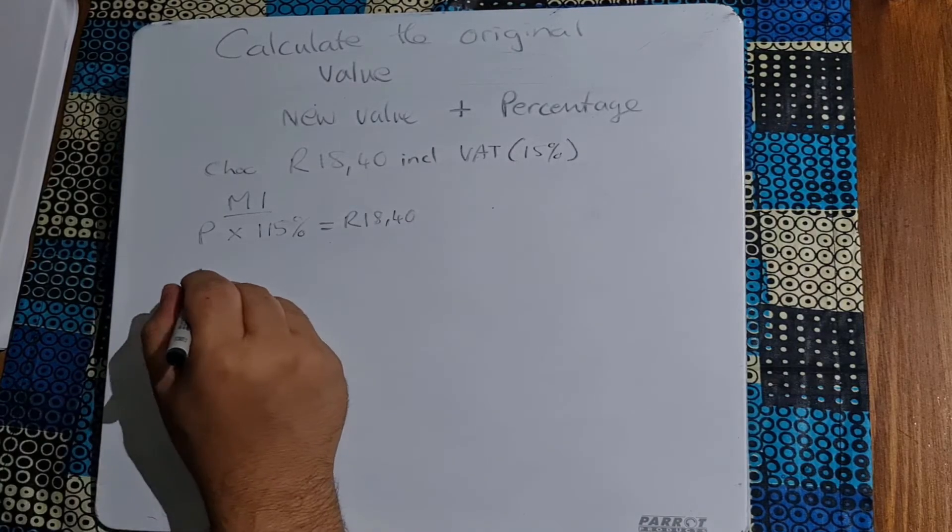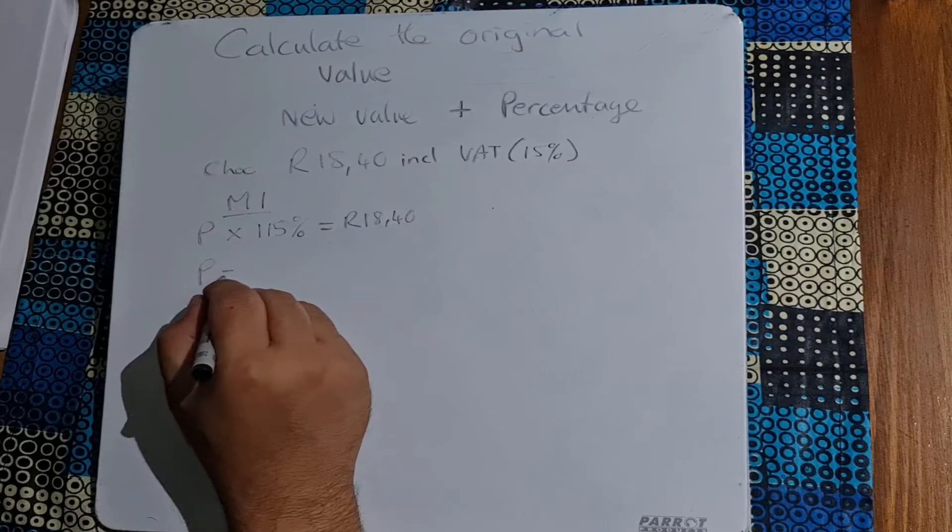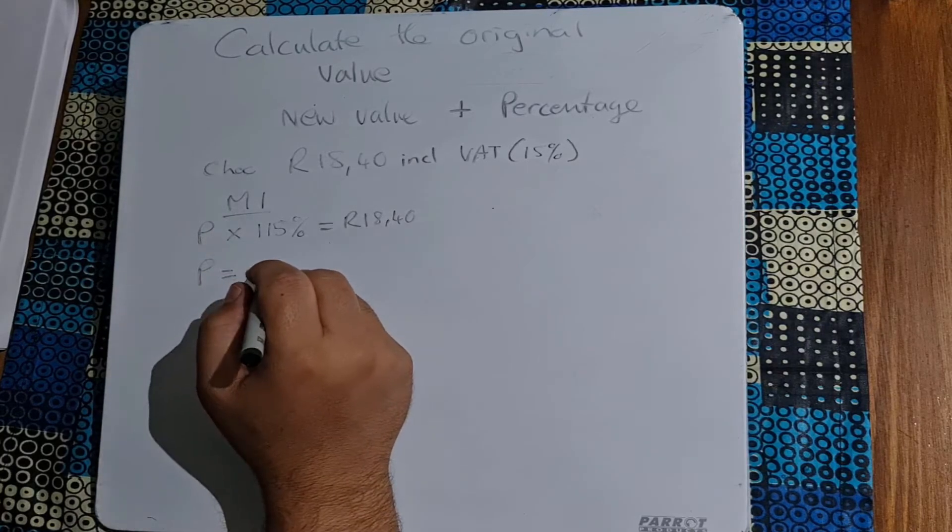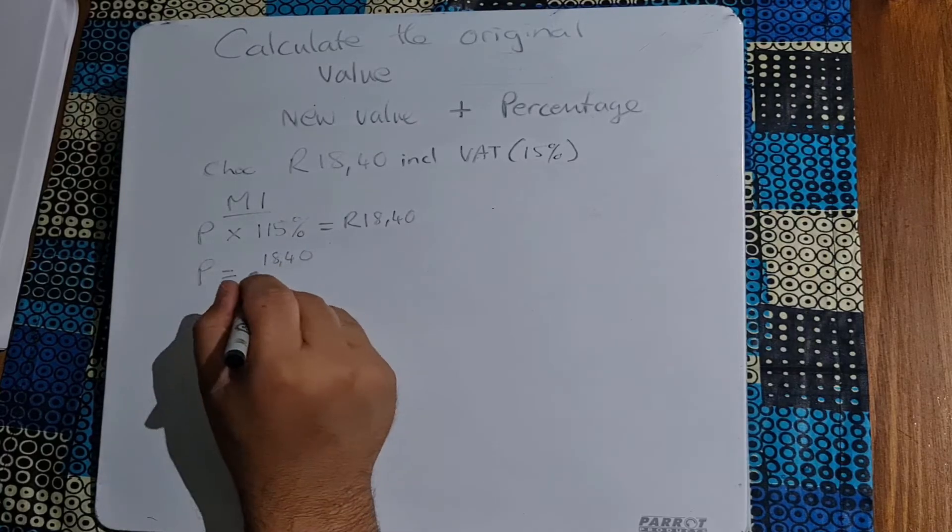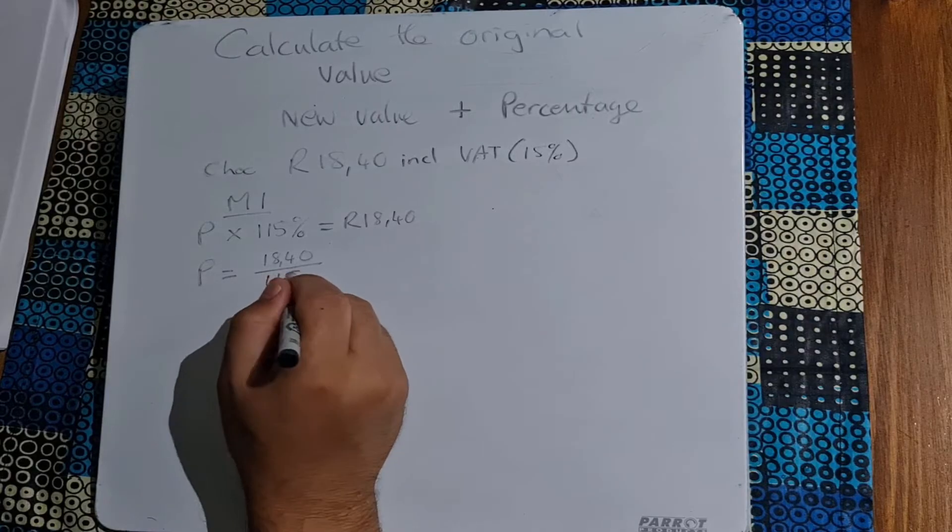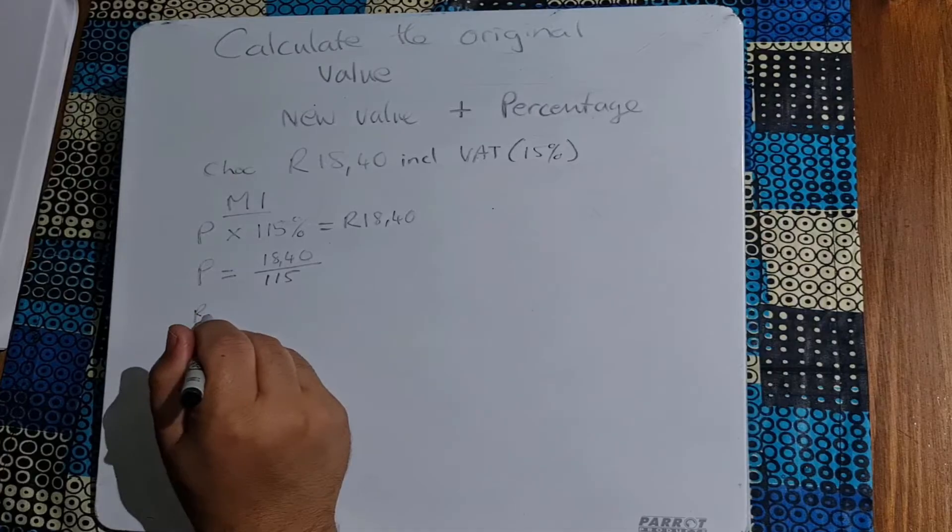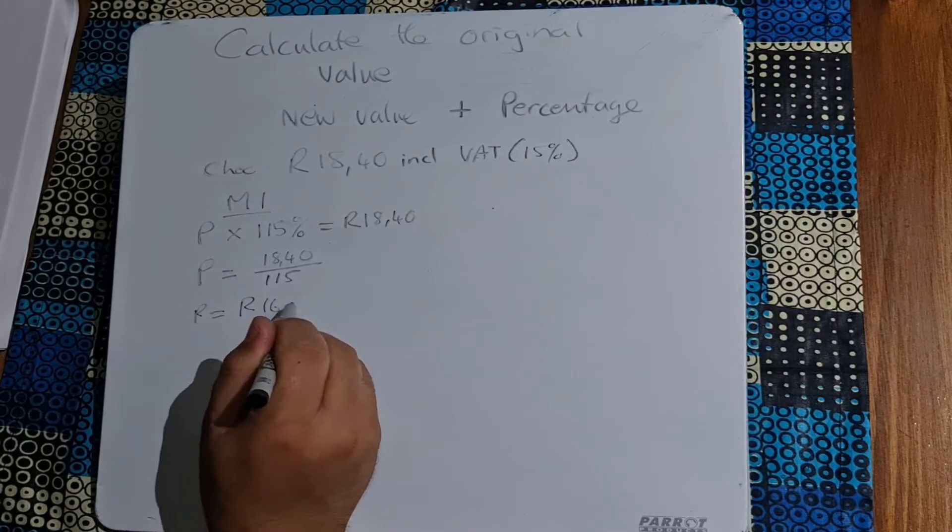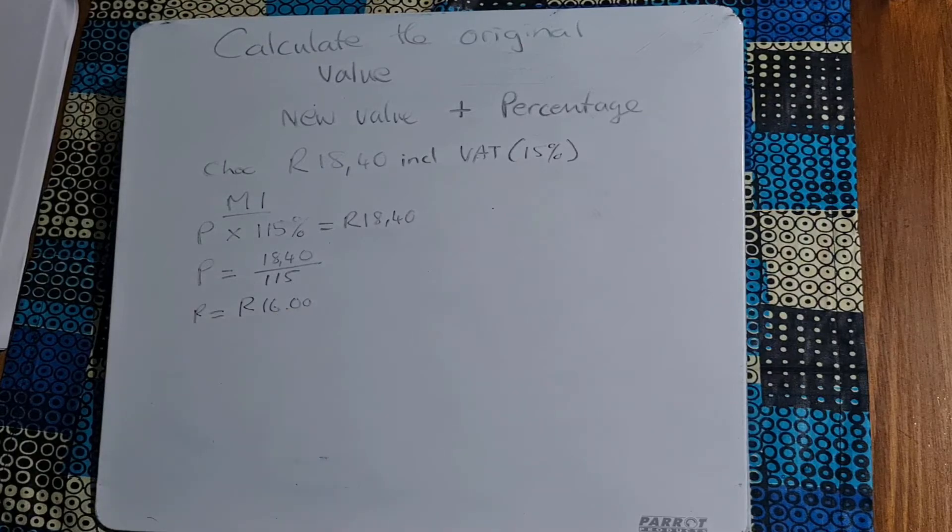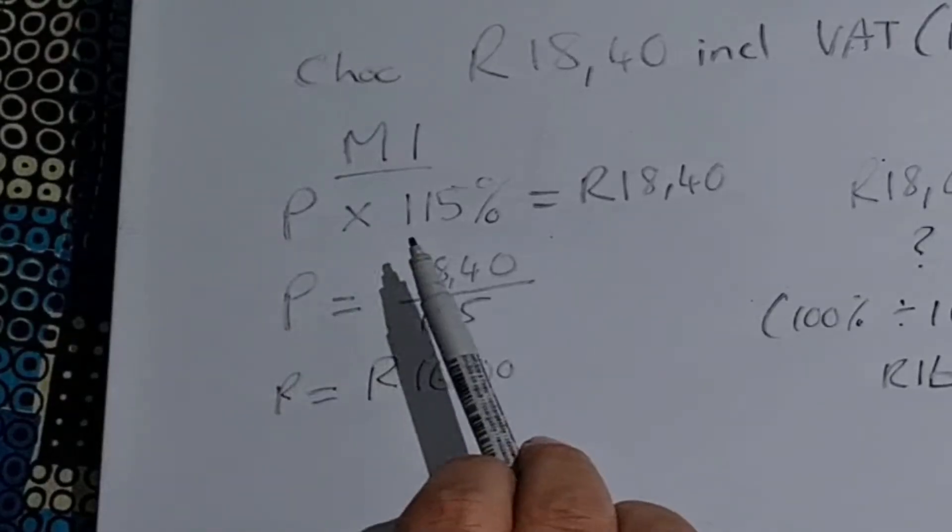So how are we going to do this? Now we're going to take our P and say equals, and we're going to take our R18.40 and divide that by that percentage 115, and that's going to end up giving me an answer of R16.